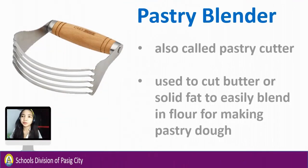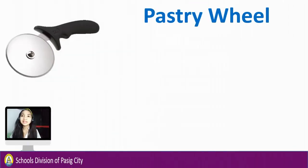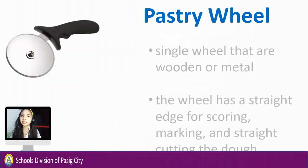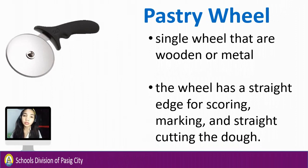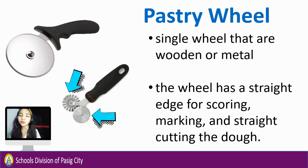Pastry blender, also called pastry cutter, is used to cut butter or solid fat to easily blend it into flour for making pastry dough. Lastly is the pastry wheel — a single wheel that is wooden or metal. The wheel has a straight edge for scoring, marking, and straight cutting of dough. Aside from the single-wheel cutting tool, there is also a two-wheel version: the first wheel is for scoring and marking, and the other wheel is for cutting.